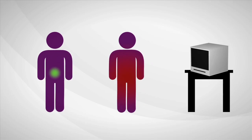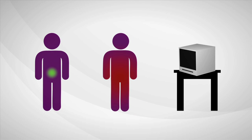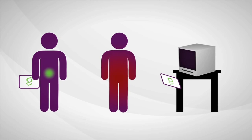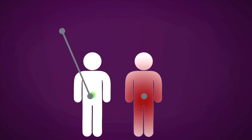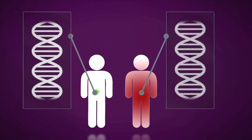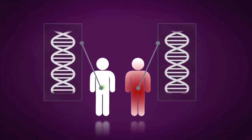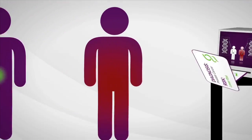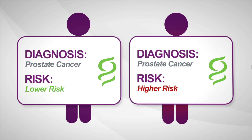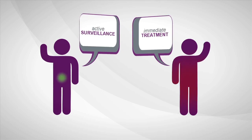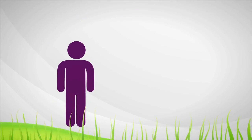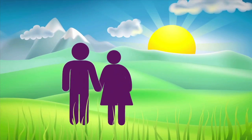What if there was a test that could determine how aggressive prostate cancer is? Genomic Health is developing a new test to do just that. By reviewing the underlying biology of the tumor and using genes from multiple biologic pathways, the test can predict the aggressiveness of prostate cancer when diagnosed, allowing a man to make a more informed treatment decision with confidence, taking care of himself with more information and greater peace of mind.